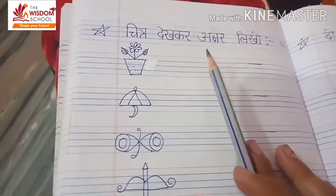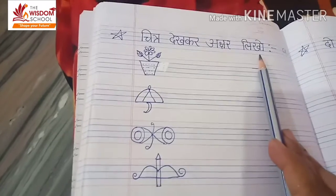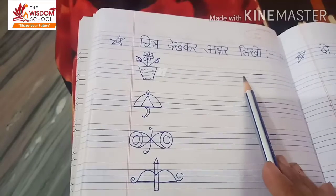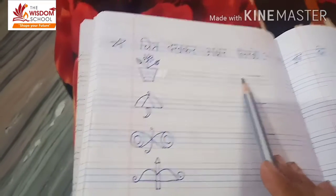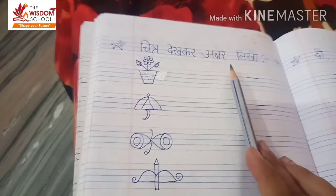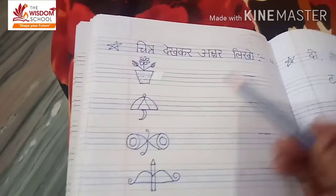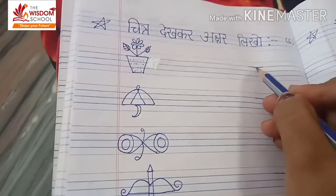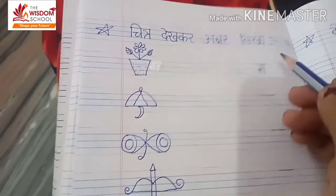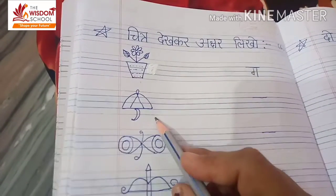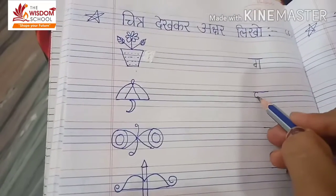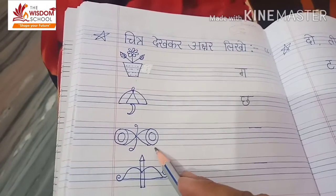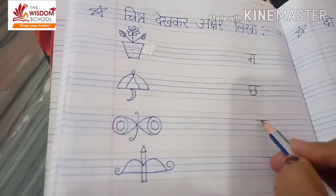Ab humne yahan likha hai 'chitra dekhkar akshar likho.' Toh kuch students ne shabd likha hai — lekin bacche, abhi humne aapko matraein nahi karwayi hain, sirf 'aa' aur chhoti 'e' ki maatra ki hai. Toh aapne sirf pehla akshar likhna tha. Jaise yahan 'gamla' hai toh pehla akshar 'ग' hua. Next chitra 'chhata' toh 'छ'. Next chitra 'damru' toh 'ड'.